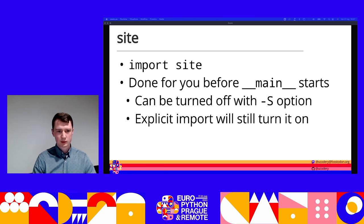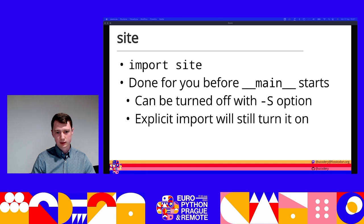Python still gives us the power, so if we really don't want it, we can turn it off with an option on the command line. Or if we decide later we really do want it turned on, we can still be explicit — we don't have to let Python do it behind the scenes.